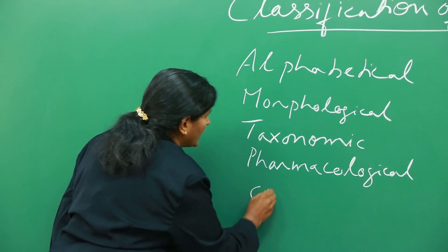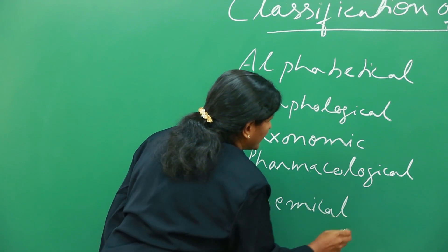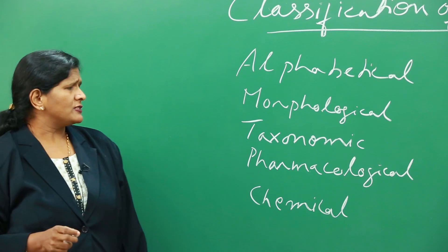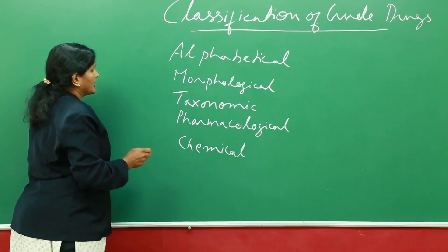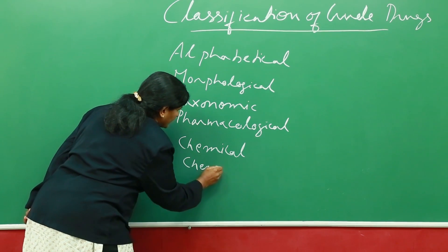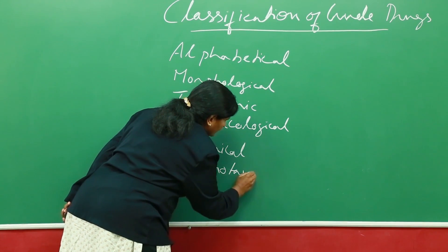You have another one called chemical classification, where the drugs are classified depending on the chemical constituents which are present in them. Recently, there is another method of classification which is developed, which is still in its infant stages, which is called chemotaxonomical classification.